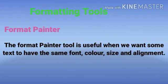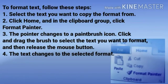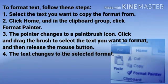Formatting Tools. Format Painter: The Format Painter tool is useful when we want some text to have the same font, color, size and alignment. To format text, follow these steps. Number 1: Select the text you want to copy the format from. Number 2: Click Home and in the clipboard group, click Format Painter. Number 3: The pointer changes to a paintbrush icon. Click and drag the brush to select the text you want to format, and then release the mouse button. Number 4: The text changes to the selected format.